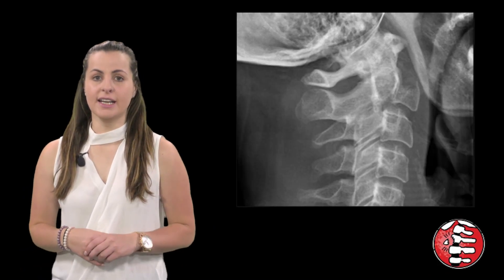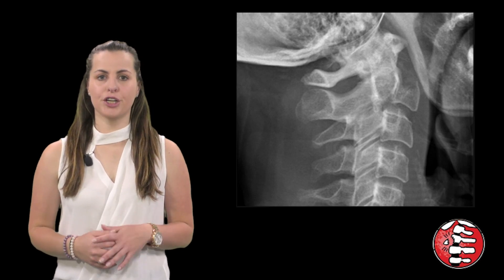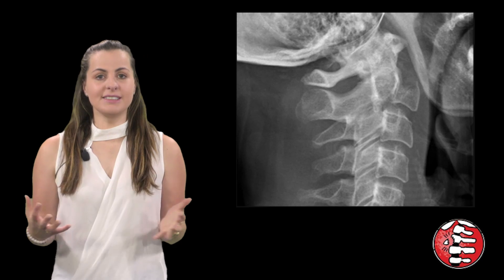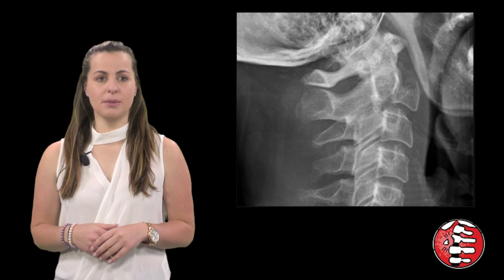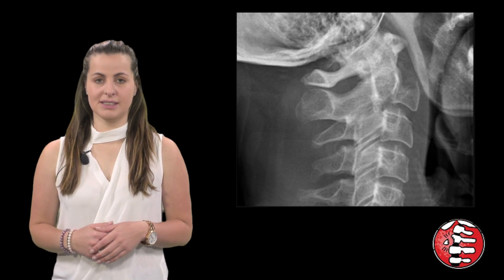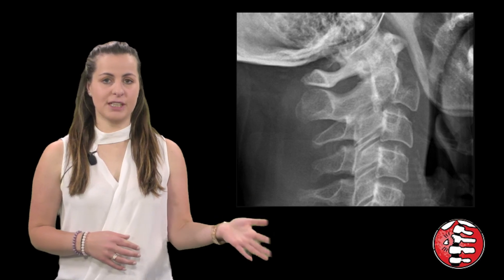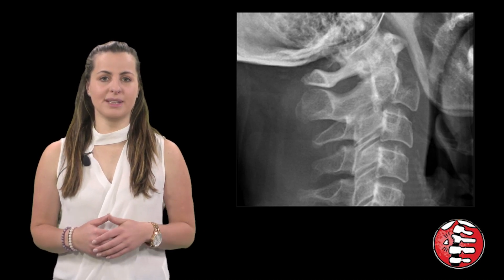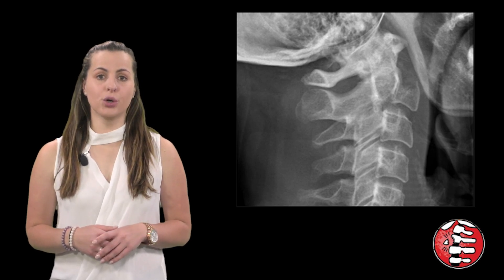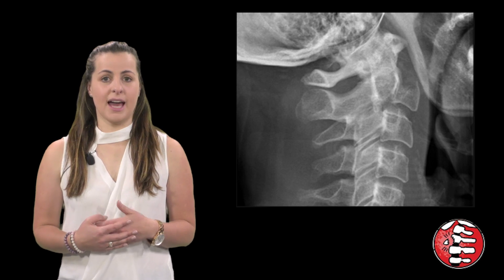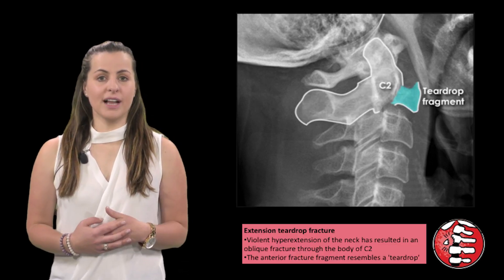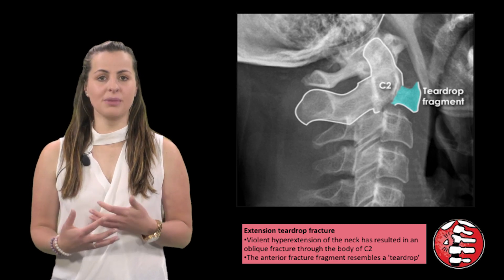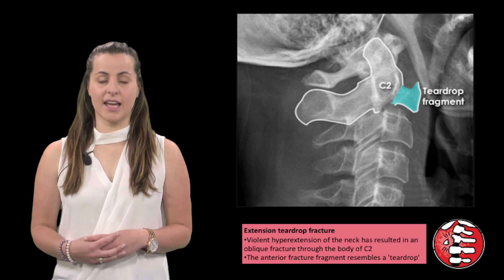The extension teardrop fracture typically occurs due to forced extension of the neck, resulting in avulsion of the anteroinferior corner of the vertebral body. These fractures are stable in flexion but unstable in extension as the anterior longitudinal ligament is disrupted. Radiographic features include an anteroinferior corner avulsion fracture from the attachment of the anterior longitudinal ligament; the fragment is an irregular shape reminiscent of a teardrop, with vertical height equal to or greater than the width of the vertebral body. Additional fractures are commonly associated, and CT is indicated in all cases.